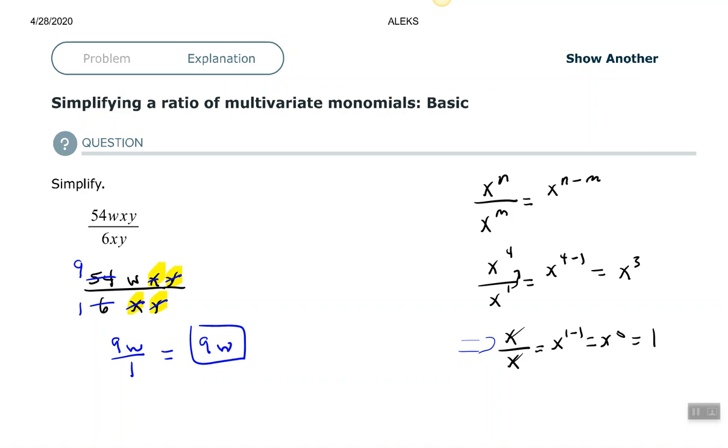So the quick way, and I know I went through and explained the quotient rule, but the quick way here is just to simplify the numerical portion of the fraction and then cancel those like bases out in the numerator and denominator. So the X with the X, the Y with the Y.